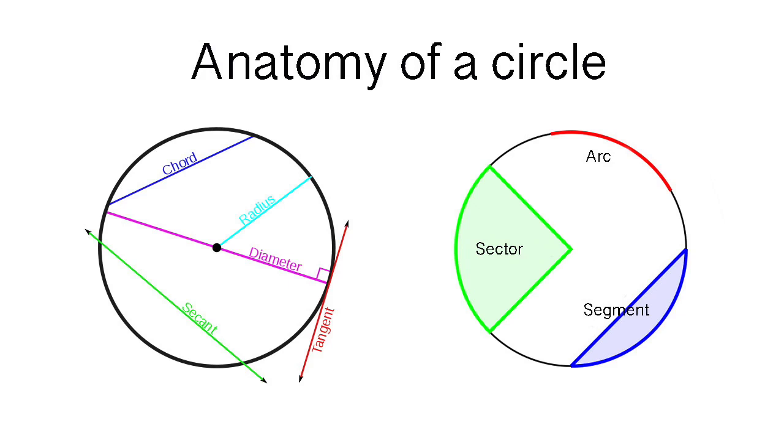A segment is part of a circle bounded by a chord and the arc subtending the chord. A line touching a circle in one place is called a tangent. Tangent lines are perpendicular to radii.